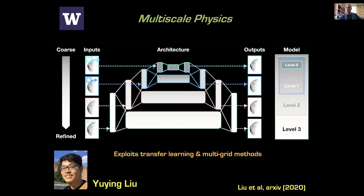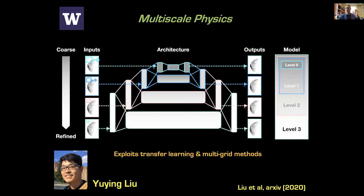A couple of additional notes: you can do multiscale physics with neural networks — work with Yuying Liu, building on the concept of multigrid methods from computational physics: refine your computation where the error is large. It maps exactly to convolutional neural networks with coarse-grained pictures, refining wherever error is big. This gives you transfer learning with a multigrid architecture built right into the neural networks.